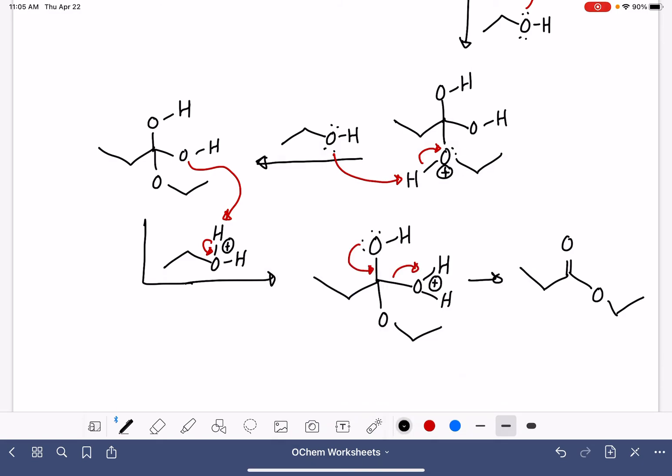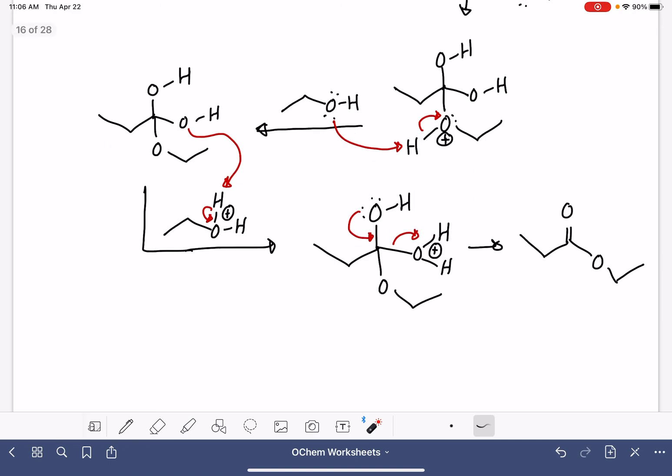Same kind of thing. We could have chosen to take the lone pair of electrons from this oxygen and move them down, and that would have complicated things a little bit, but we would have been able to figure it out. This is the path that's going to get us to the product as quickly as possible in terms of the mechanism.